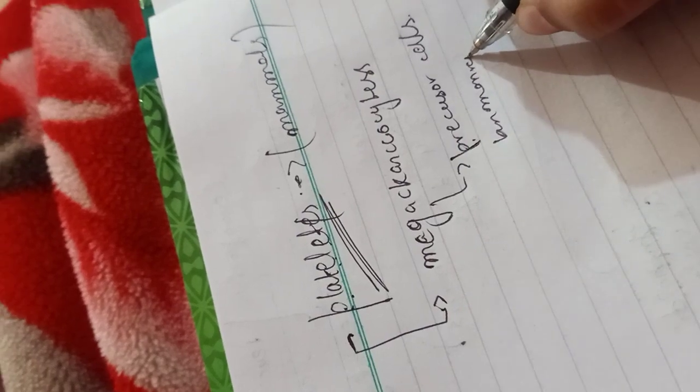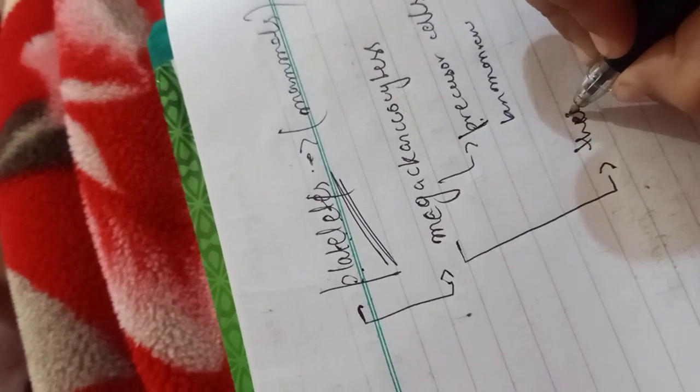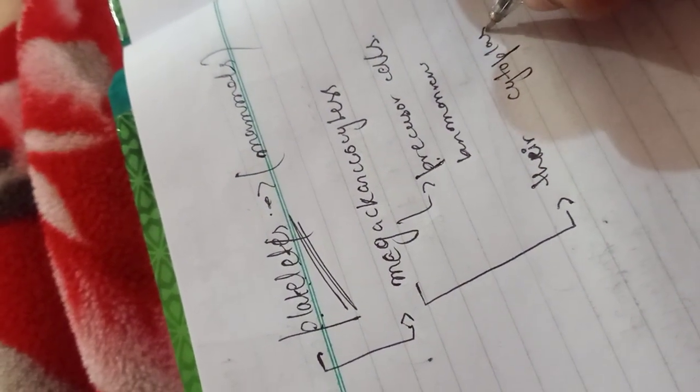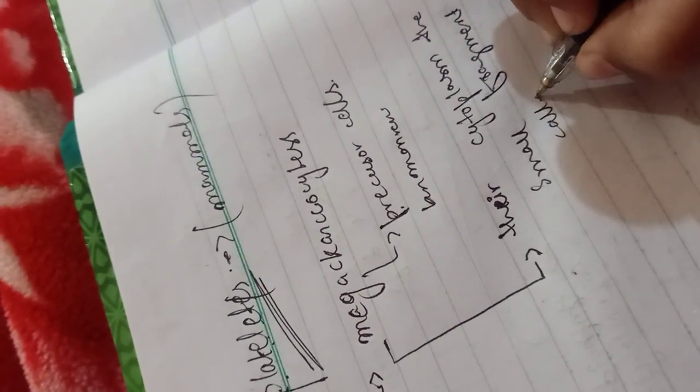If we talk about the platelets, platelets are basically small fragments present in the megakaryocyte cytoplasm. These small fragments in megakaryocyte cells are called platelets.